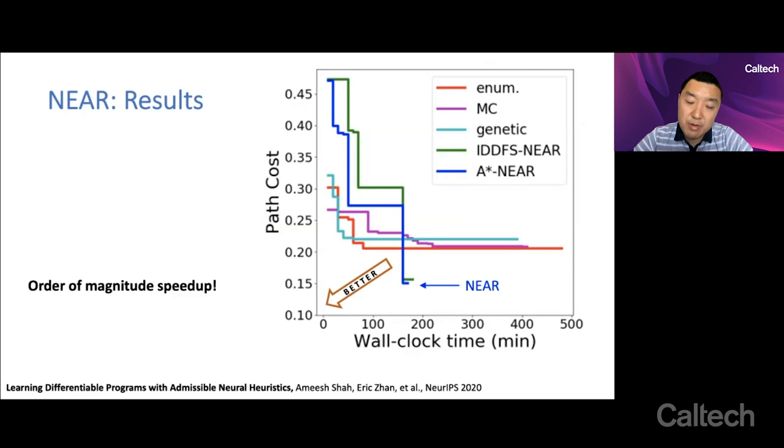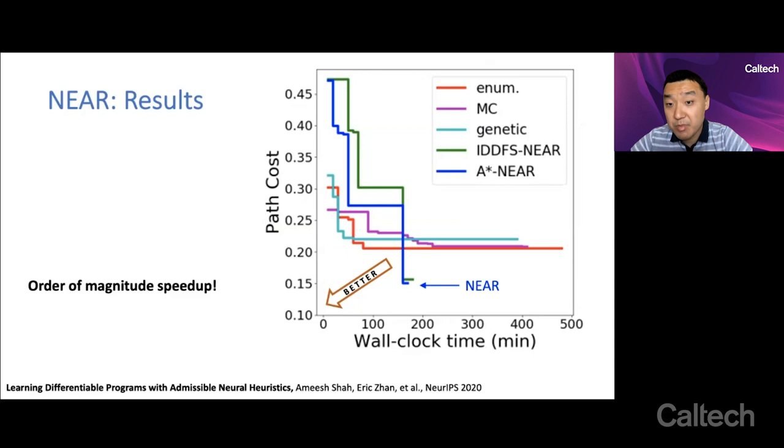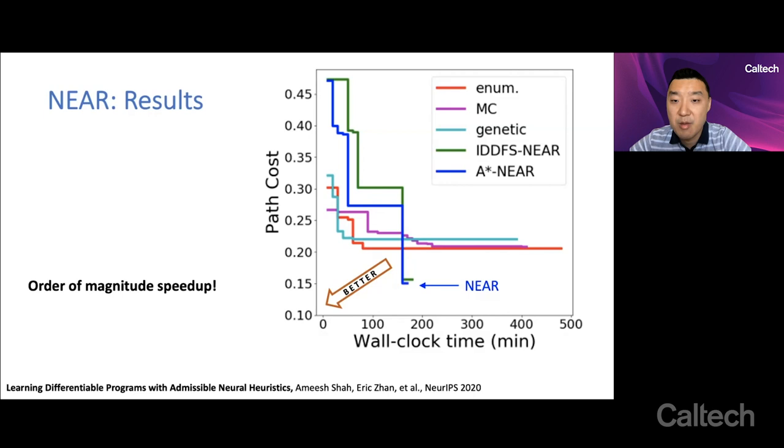And so here's just one result where we are doing program induction using these differentiable programs. The bottom left, this is a learning curve of wall clock time versus some notion of complexity cost. Because we want simpler programs that are also accurate. That's what the y-axis is. And you want to be as close to the bottom left corner as possible. And the takeaway is that this approach offers an order of magnitude speed up compared to more naive program structure learning approaches, which is very exciting.